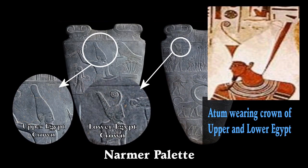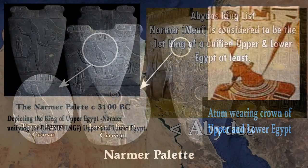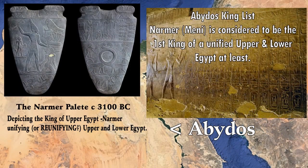Atum is a distinctly lower Egyptian or northern Egyptian god, very prominent in that part of the world. When we see depictions of Atum we typically see him wearing the combined crown of lower and upper Egypt. On the Narmer Palette, on one side and the reverse, we see him wearing the crown of upper Egypt and the crown of lower Egypt — representing the reunification of Egypt.